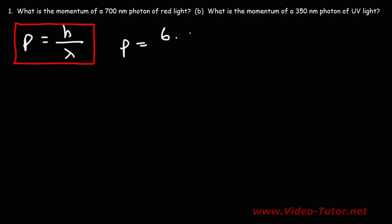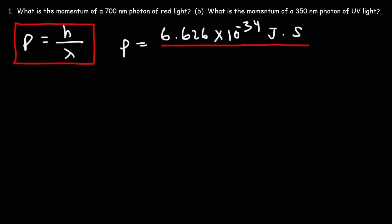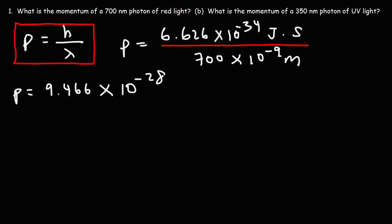So to finish this problem, let's replace h with its value: 6.626 times 10 to the negative 34 joule-seconds, and divide it by the wavelength. For part A, we have a 700 nanometer wavelength, or 700 times 10 to the negative 9 meters. The momentum comes out to 9.466 times 10 to the negative 28 kilograms times meters per second.